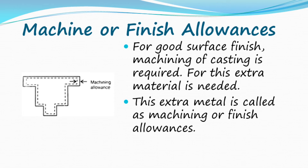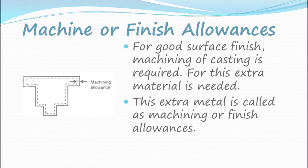Machining or finish allowance: For a good surface finish, machining of the casting is required. For this, extra material is needed. This extra metal is called the machining or finish allowance.